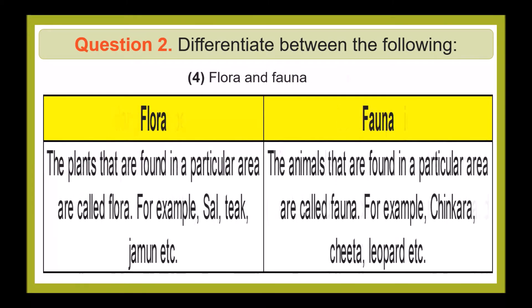Flora and Fauna. The plants found in a particular area are called flora — for example, sal, tea, jamun, etc. The animals found in a particular area are called fauna — for example, chinkara, cheetah, leopard, etc.